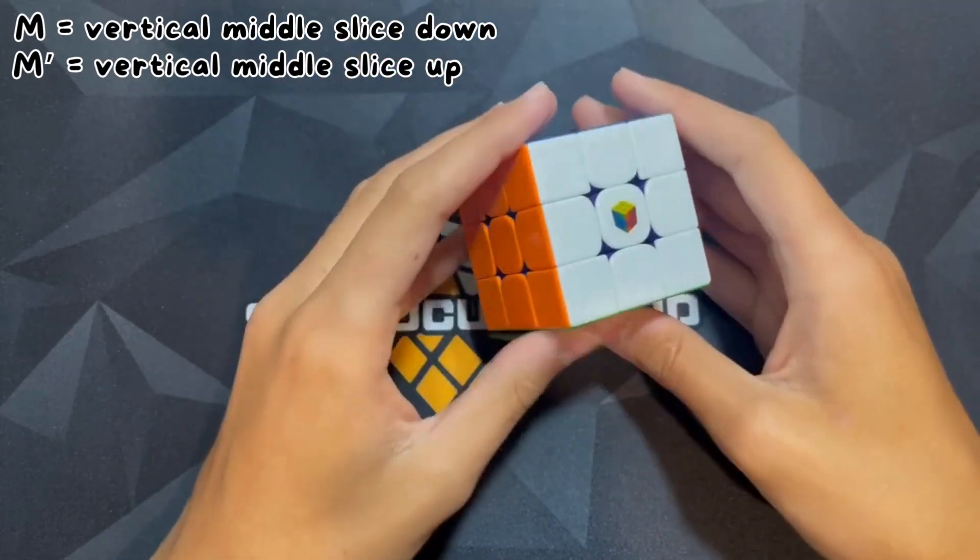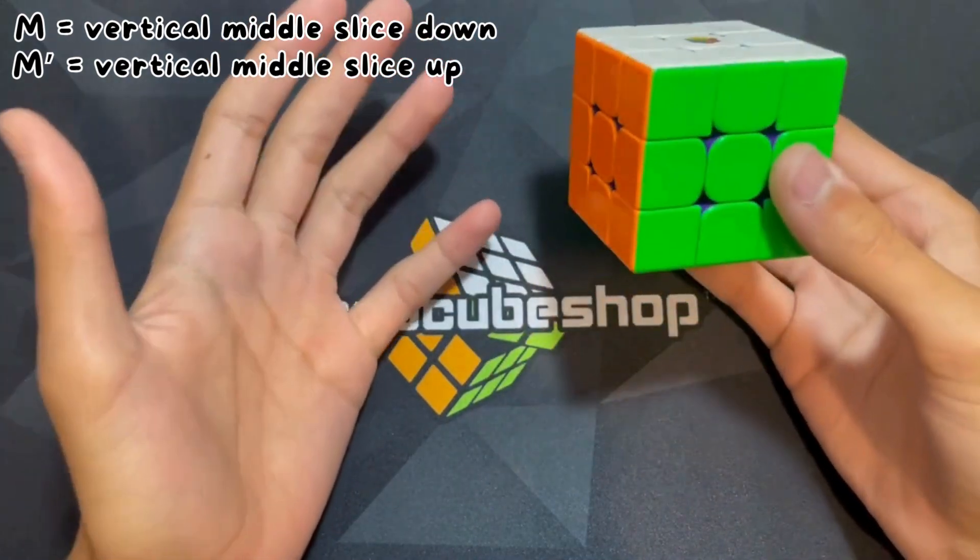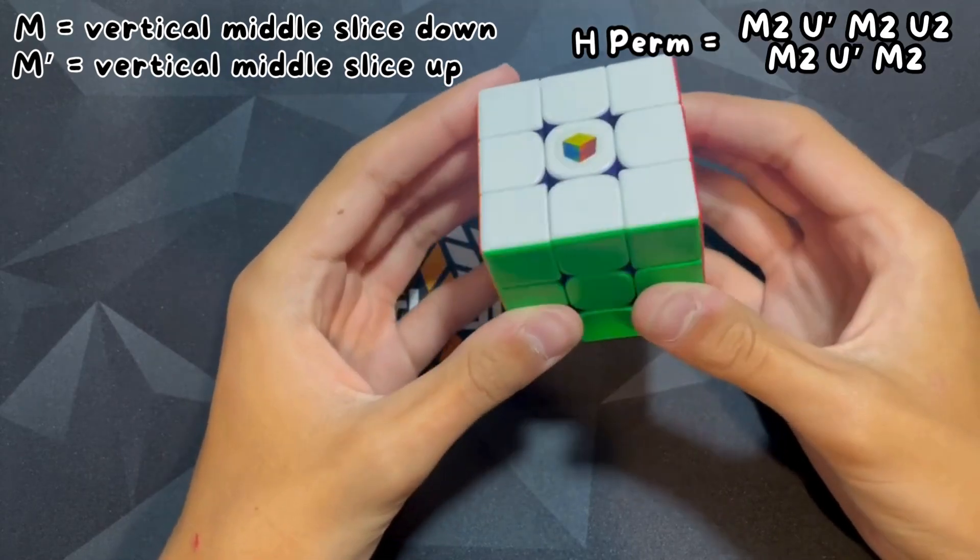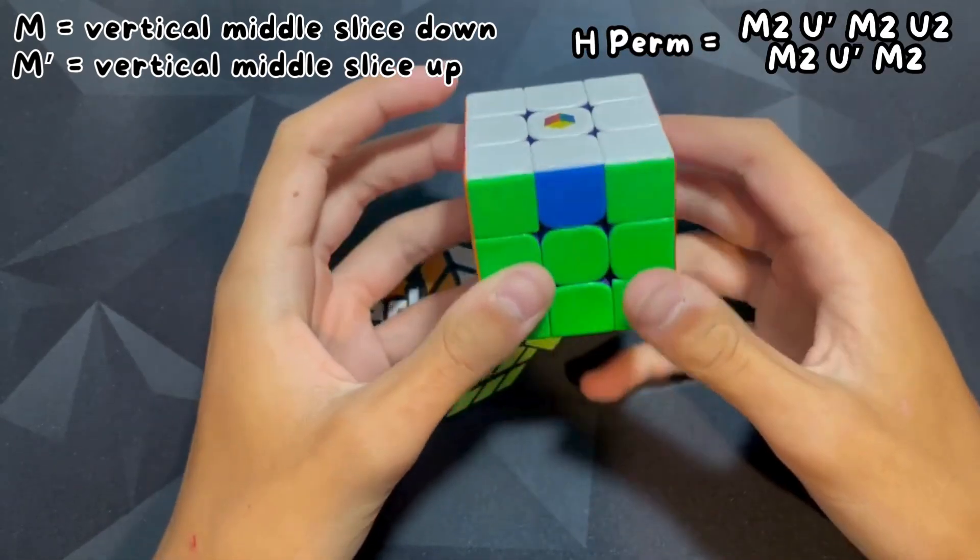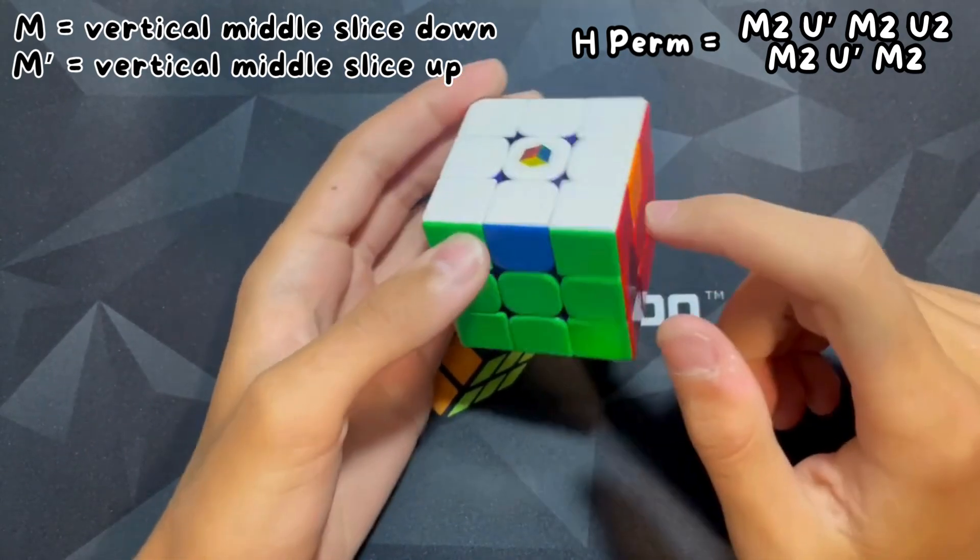M is the most popular you see in the most algorithms, especially PLL. An example is like the H perm. This is the M slice, this is the E slice, and this is the S slice.